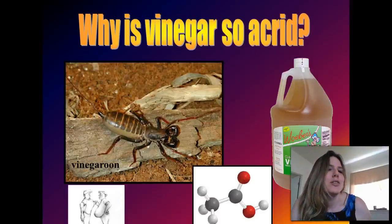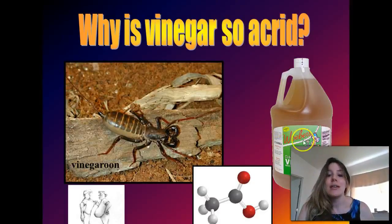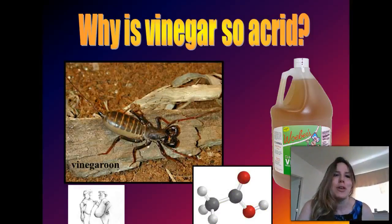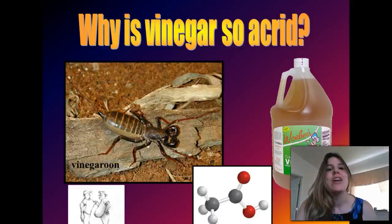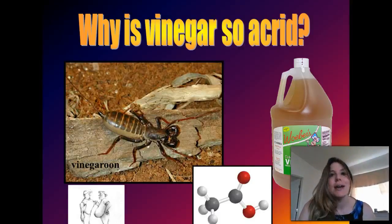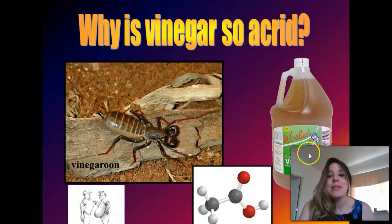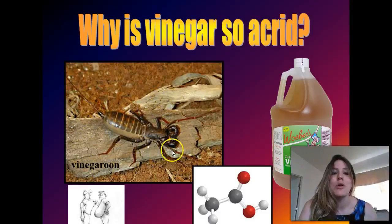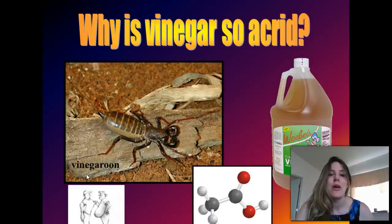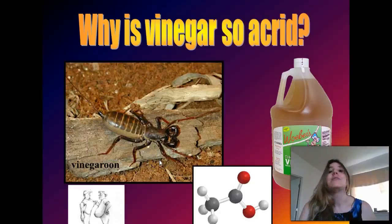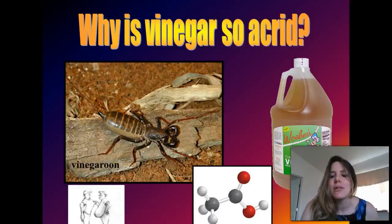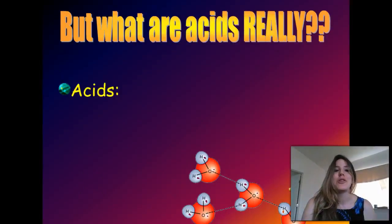Here's some other acids you might be familiar with. Vinegar is acetic acid, this compound right here. You don't need to memorize the chemical formulas of these compounds, just to give you an idea of some common acids you'll find in your house. That same acetic acid we use to make vinegar—this little bad boy here, a vinegar roon, is a creepy looking insect from Arizona that sprays a defensive secretion of highly concentrated acetic acid that will actually burn your lungs. Acids can come in different concentrations.